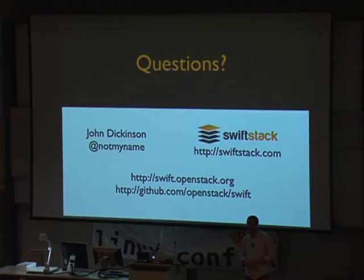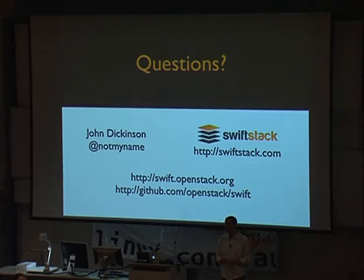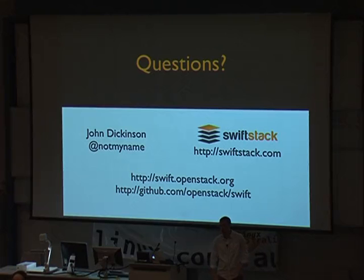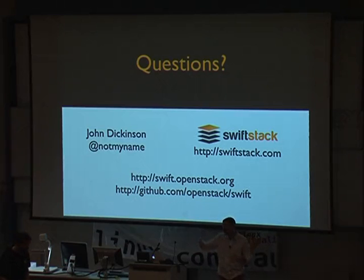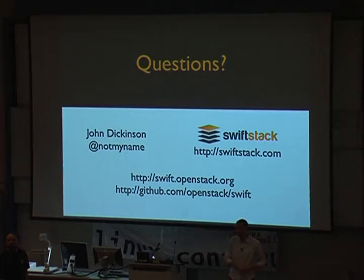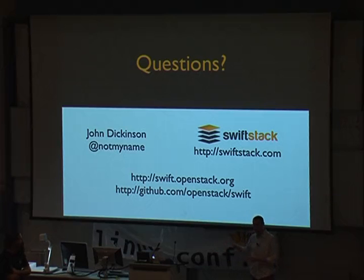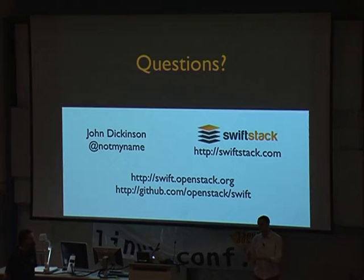Follow-up: You said there are four key parts — proxy, account, container, object. In production, do we expect each to be a separate physical or virtual machine, or do we bundle them? You can deploy either way. Oftentimes many deployments will run all of these on one box, and you can have many of those boxes sharing responsibility — that's completely fine. Larger deployments generally end up with a separate proxy layer behind a load balancer combined with segmented storage nodes. It really depends on how many SKUs you can buy and your actual needs — Rackspace's use case as a public storage provider looks very different from a bank or a Wikipedia.